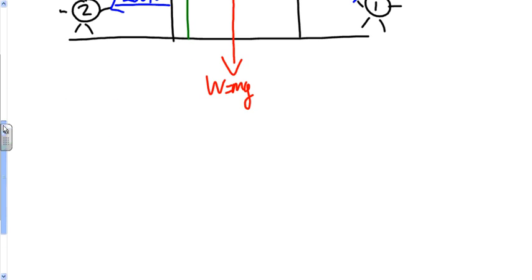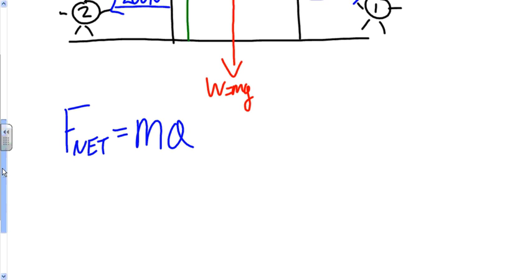Newton's second law reads, F net equals mass of the block times the acceleration of the block. Let's think about what our F's are.